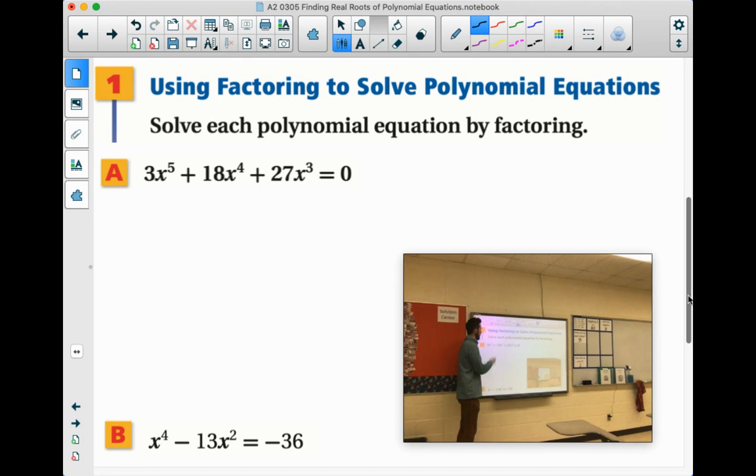So 3, 18, and 27, 3 goes into all of those. So we can factor out a 3. We have x to the 5th, x to the 4th, and x to the 3rd. So that means that they all have at least x to the 3rd. That's our greatest common factor. So 3x to the 3rd. How am I going to get 3x to the 5th? 3x to the 3rd times x squared.